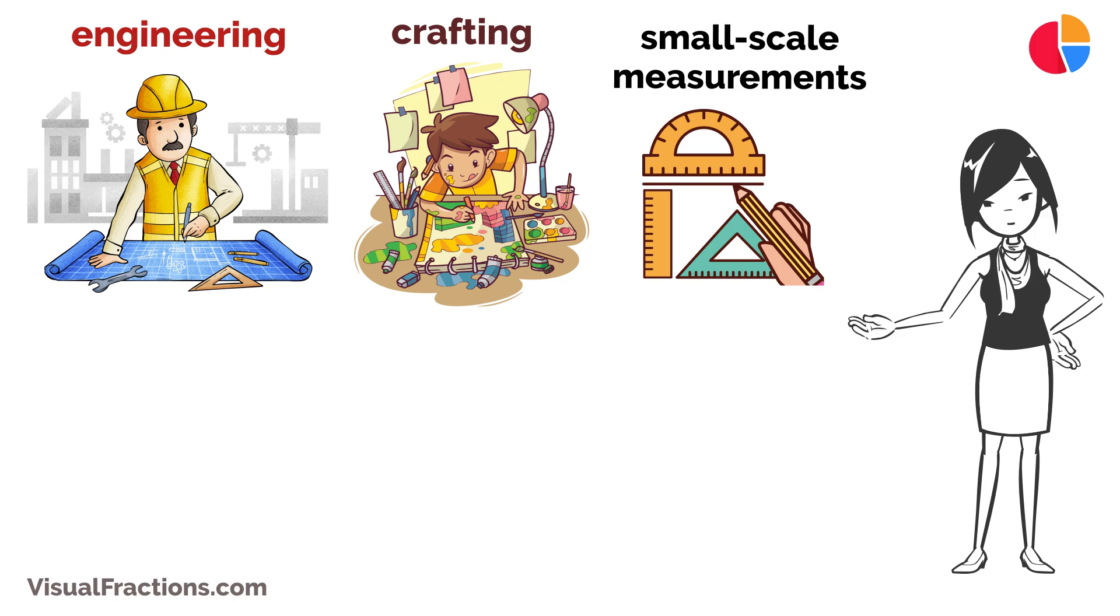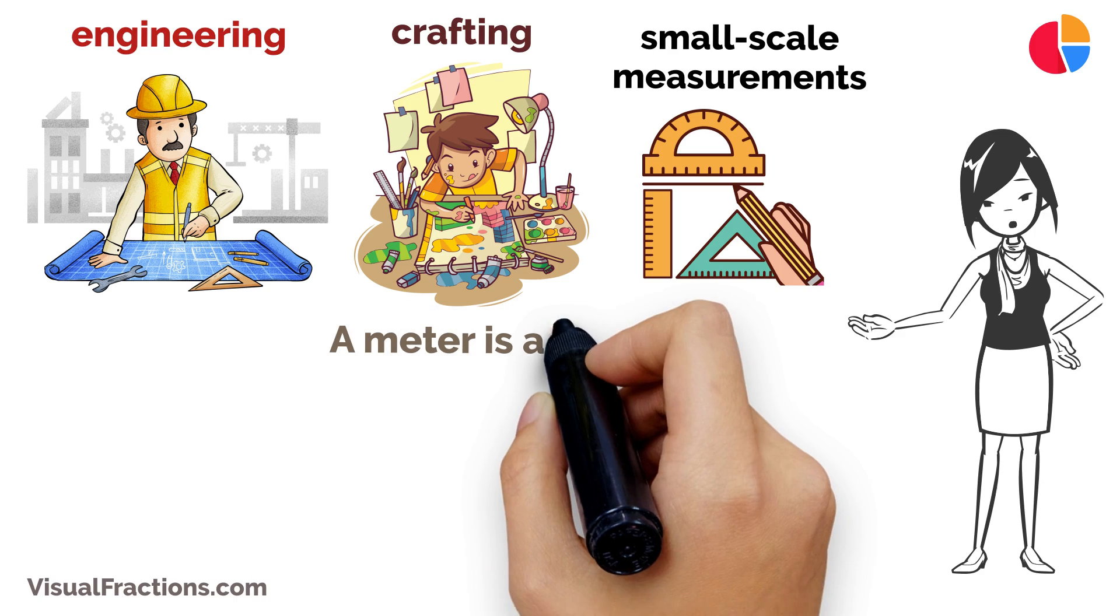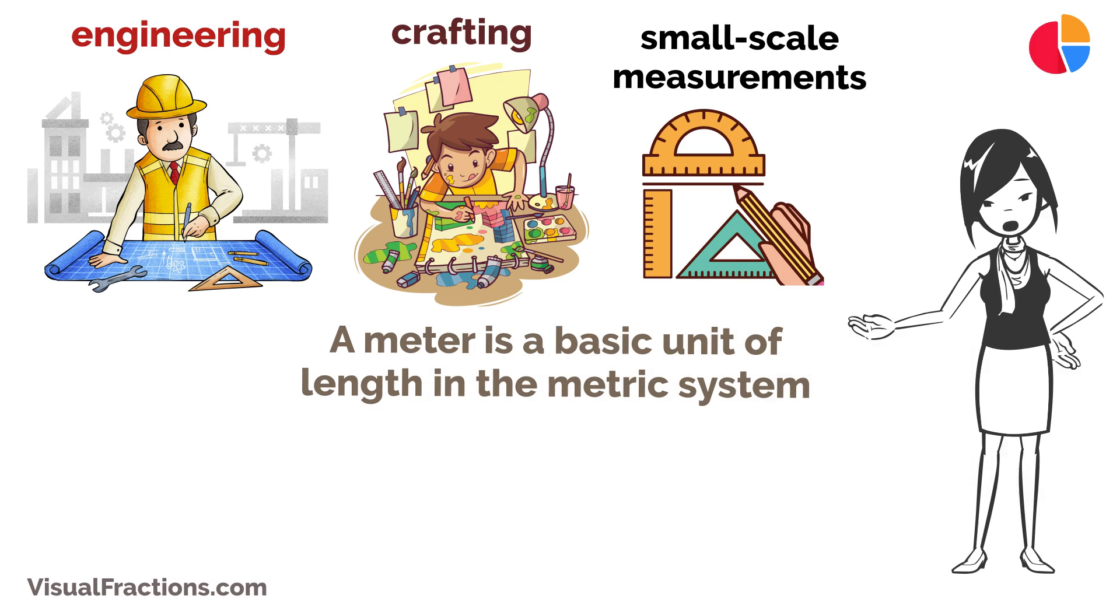First, let's talk about the units. A meter is a basic unit of length in the metric system and is used globally. A millimeter is a much smaller unit of length, also in the metric system, and is used for measuring very small distances.